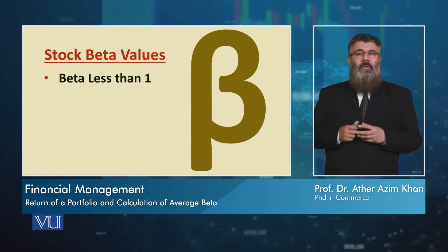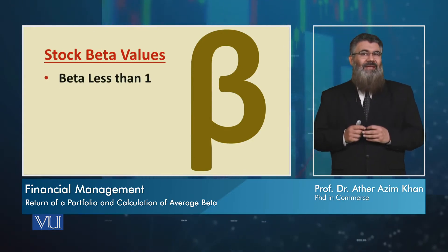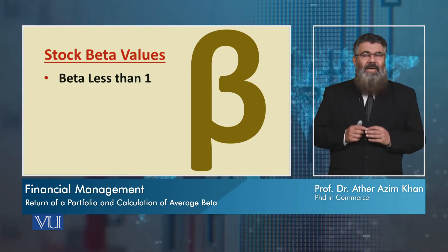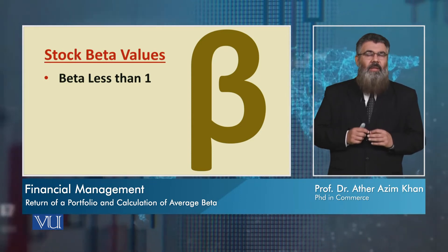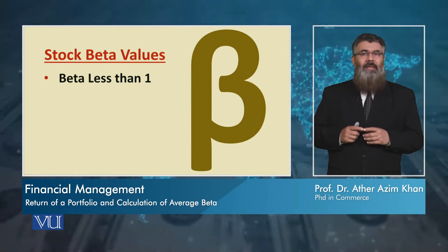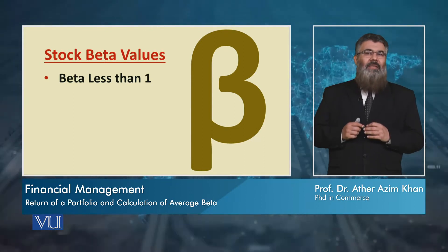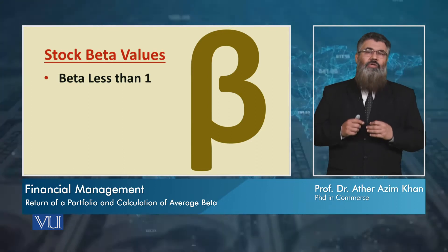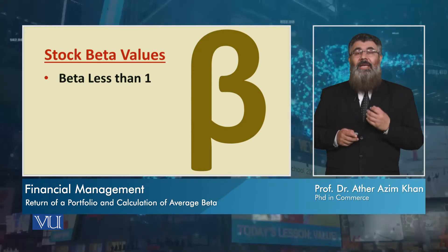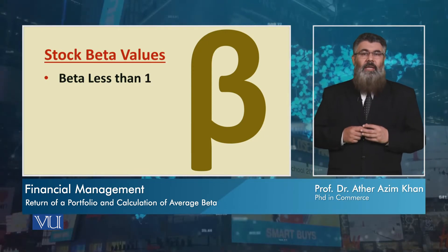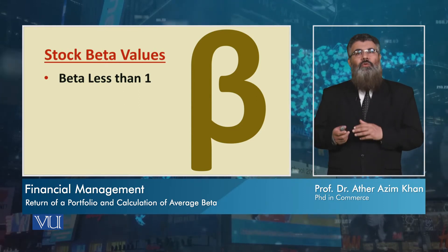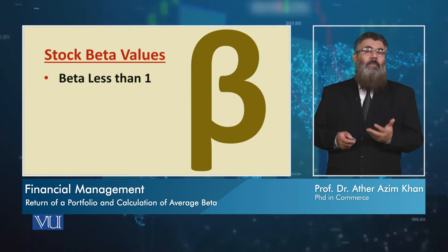If the beta of a particular stock is less than 1, it means that the change in the Y variable is less than the change in the X variable. This indicates that the stock's risk is less than the average risk of the market, and accordingly its return is also less than the market average.